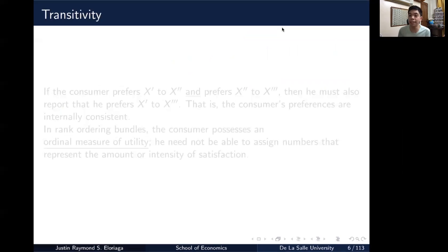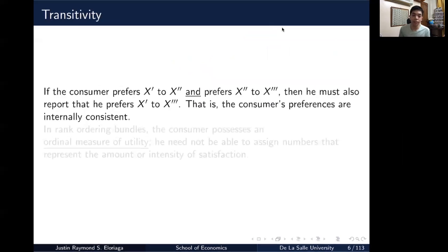The second axiom is called transitivity. In essence, this is elementary. If a consumer prefers one bundle over another and prefers that bundle over another bundle, then obviously the original bundle must also be preferred to the third one. So if the consumer prefers X prime to X double prime, and the consumer also prefers X double prime over X triple prime, then by the property of transitivity, it must be that X prime should be preferred to X triple prime. So that's all that this is saying.